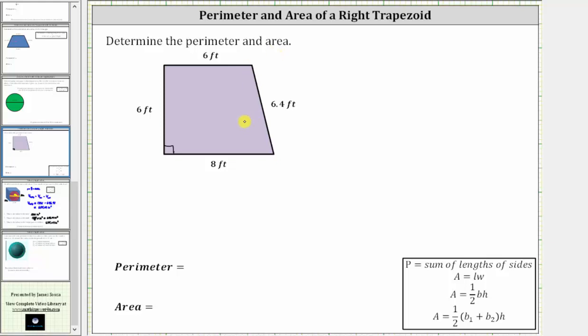Determine the perimeter and area of the right trapezoid. Let's begin with the perimeter. The perimeter of a polygon is the distance around the outside of the polygon.